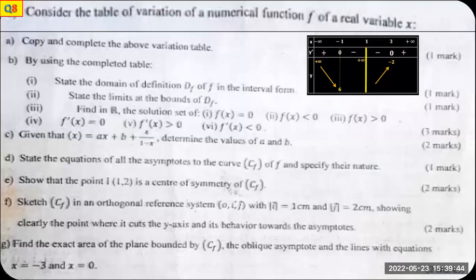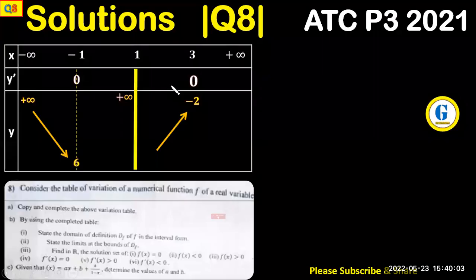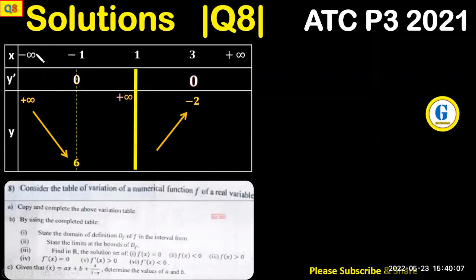Question 8 reads: consider the table of variation of a numerical function f of a real variable x. Copy and complete the variation table. Part b: by using the completed table. So let's start by copying and completing this table. You can see the domain on the first line, y prime, and y.